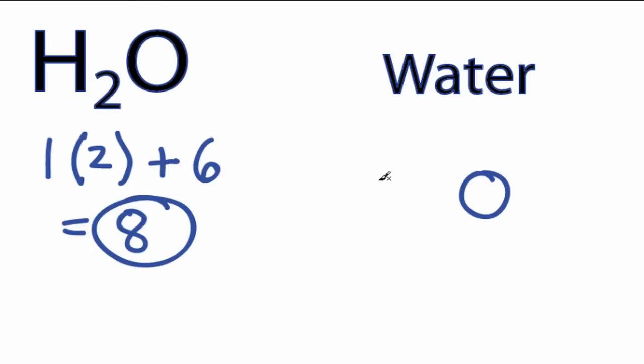We'll put the oxygen in the center, and hydrogens always go on the outside. And then we'll put a pair of electrons between the atoms to form chemical bonds. Hydrogen only needs 2 valence electrons to have a full outer shell, so both hydrogens have full outer shells.